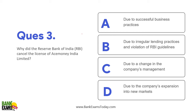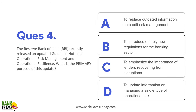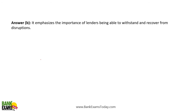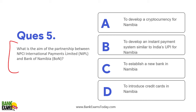Why did the RBI cancel the license of Ace Money India? Due to irregular lending practices and violation of RBI guidelines — not that important. RBI recently released an updated guidance note on operational risk management and operational resilience — not that important. What is the aim of the partnership between NPCI, NPCI International Payments Limited, and Bank of Namibia? NPCI is going to build a platform similar to UPI for Namibia. This is an important, star question.